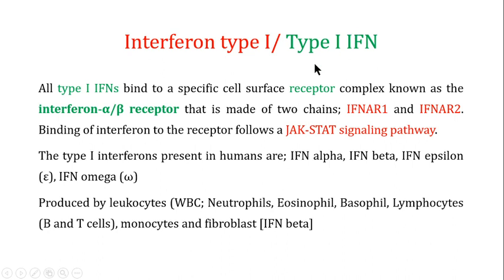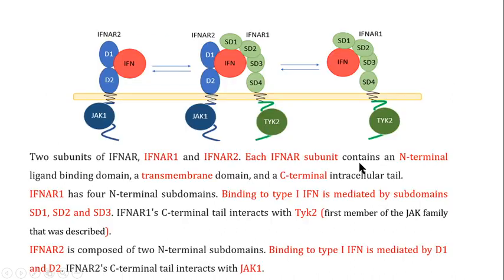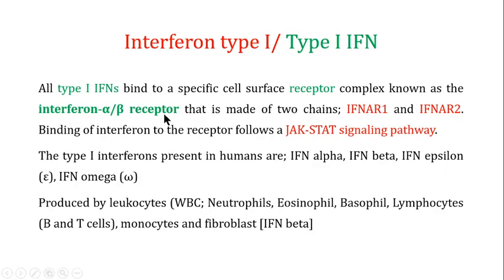Examples of type 1 interferons present in humans include interferon alpha, interferon beta, interferon epsilon, and interferon omega. These type 1 interferons are produced by leukocytes such as neutrophils, eosinophils, basophils, and lymphocytes; they are also produced by monocytes and fibroblasts. Fibroblasts are particularly important for the production of interferon beta.